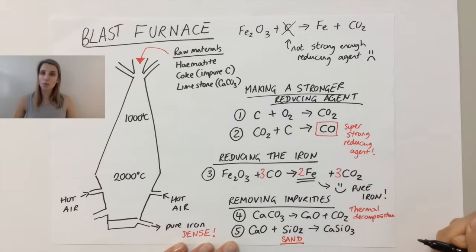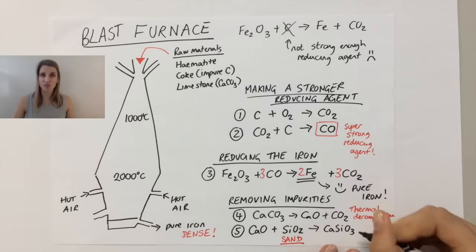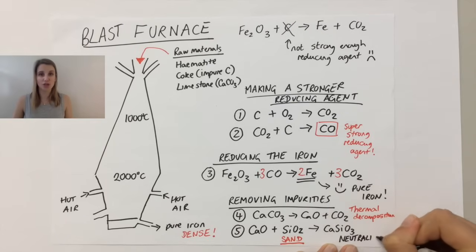This is an example of a neutralization reaction because you've got a metal oxide, which is a base, reacting with a non-metal oxide, which are acidic. So it's an example of neutralization.